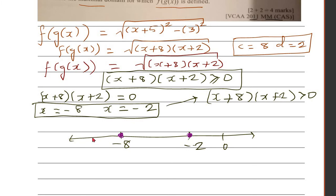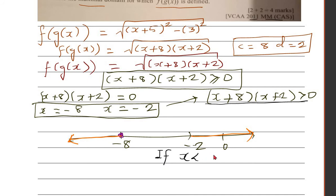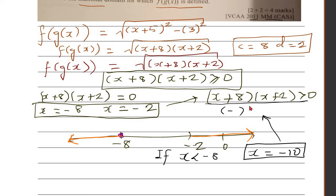We divide the number line into three regions: to the left of -8, between -8 and -2, and to the right of -2. We use trial and error to determine when the expression is positive. If x is less than -8, pick x = -10. Both (x+8) and (x+2) are negative, and negative times negative is positive, so we accept x less than -8.